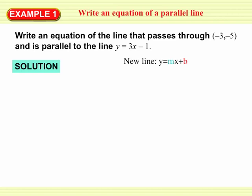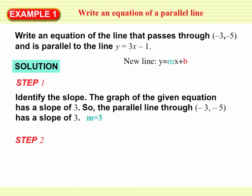You can do this without graphing anything. Think about the equation of the new line in the form y equals mx plus b. I need to find m, the slope, and b, the y-intercept. Right away I know that if my new line is going to be parallel to the given line, the two lines have to have the same slope. The given line has a slope of 3, so my new line has to have a slope of 3, meaning m equals 3.